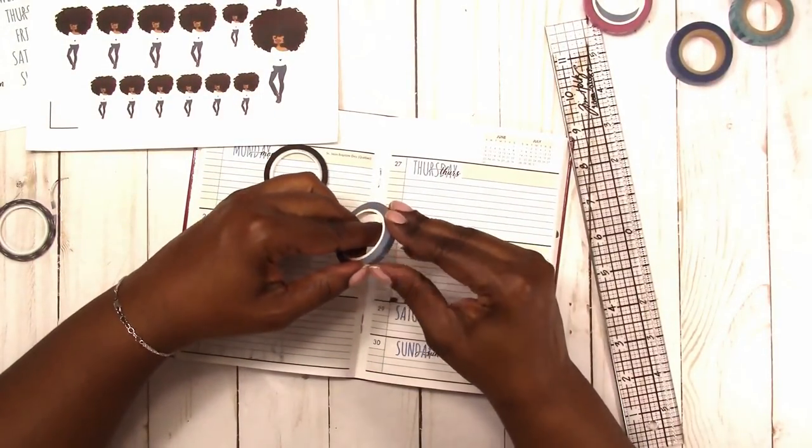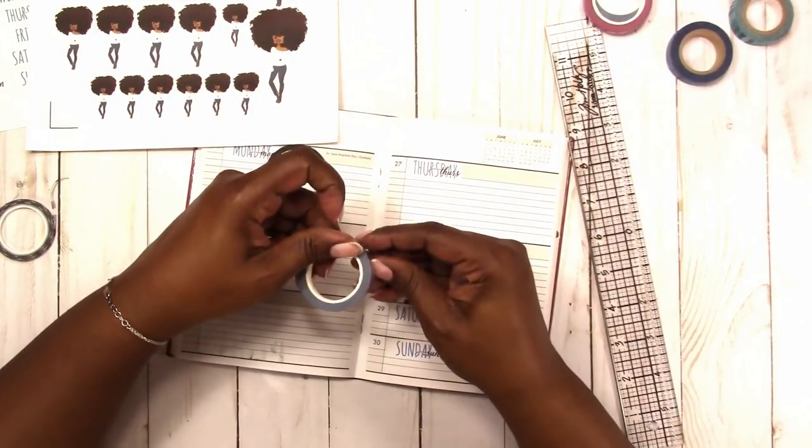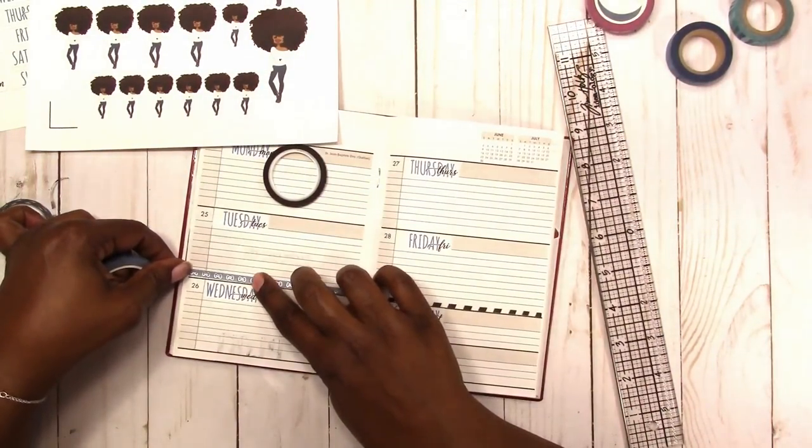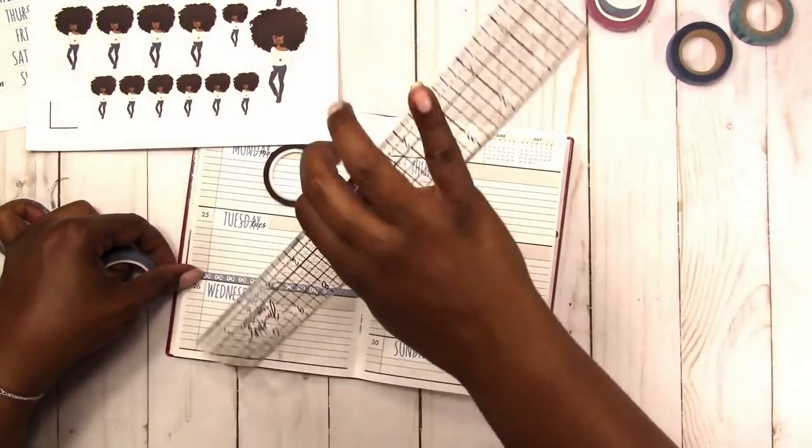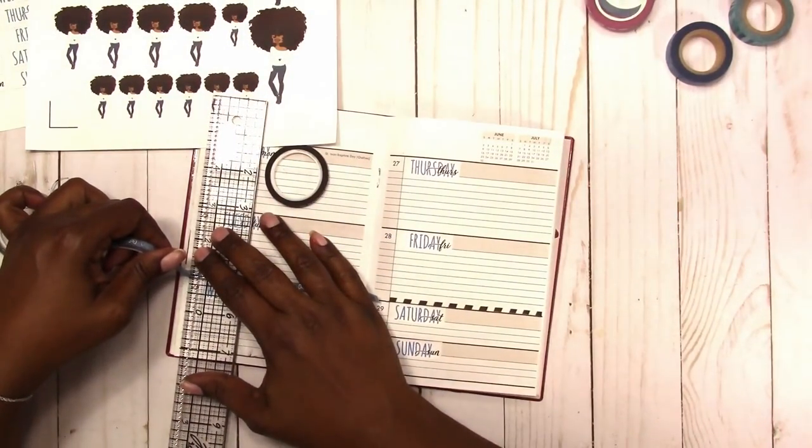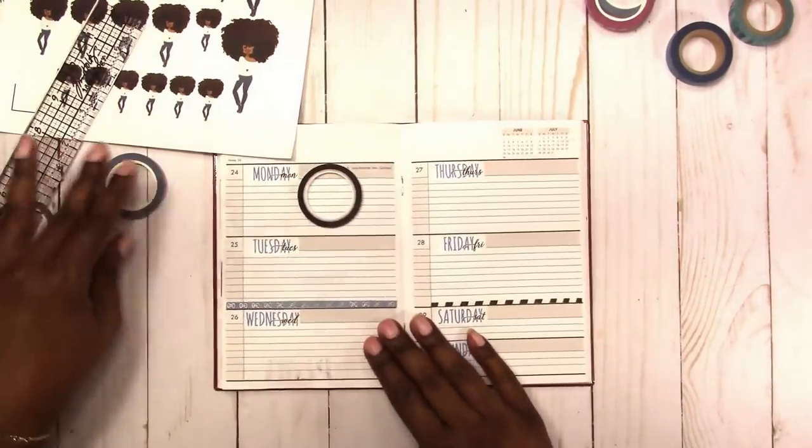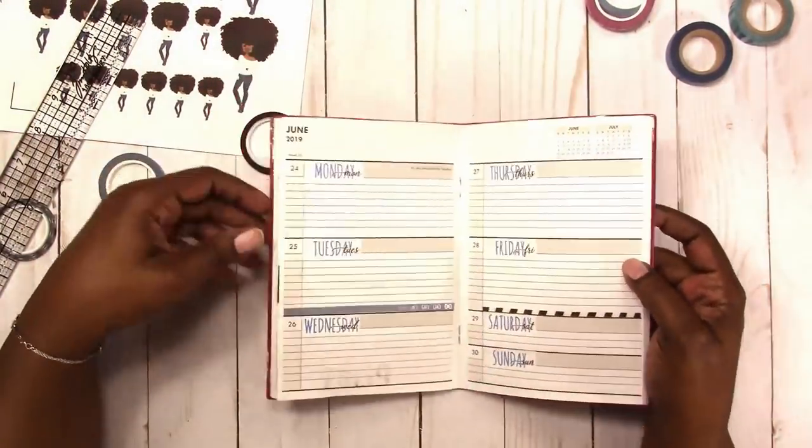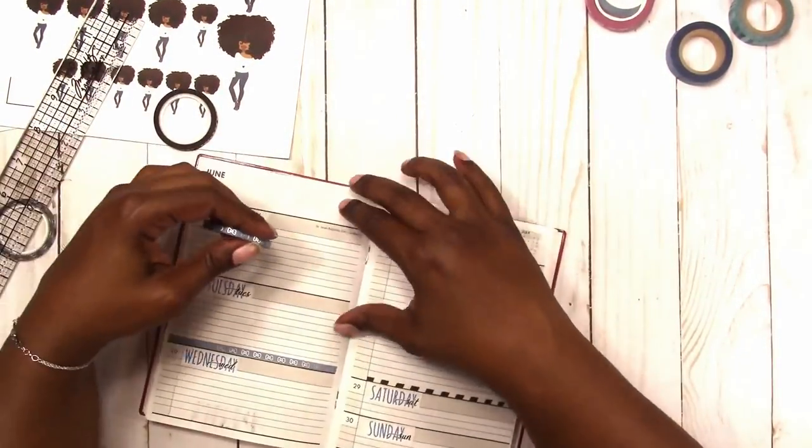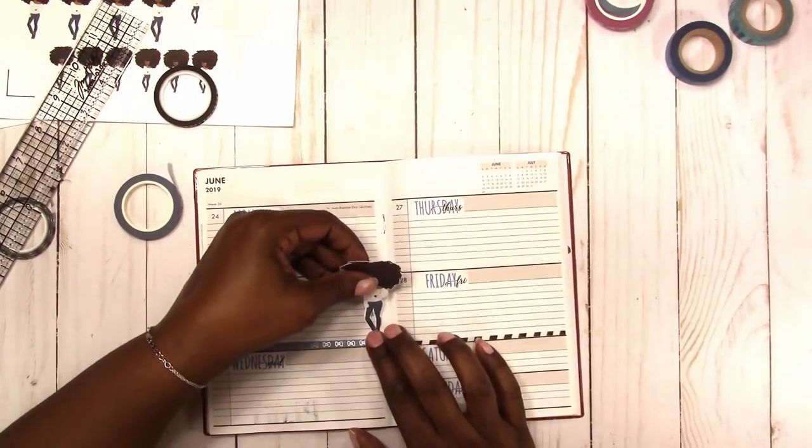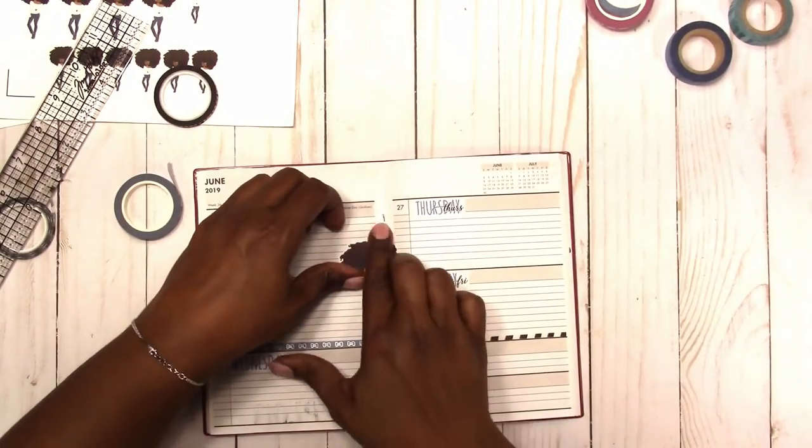This blue washi tape with the bows and silver foil is from MJ and Hope. And again, I'm just going to alternate that with the black and white stripe to divide the days. But I'm going to go ahead and place down the doll from JDM Brooklyn. She's the style big hair doll.